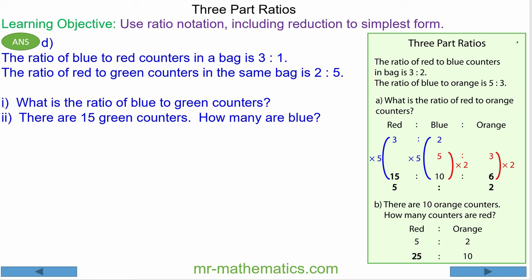For question d, we have the ratio of blue to red which is 3 to 1, and the ratio of red to green which is 2 to 5. We need to write a three-part ratio using the lowest common multiple of the red which is 2.